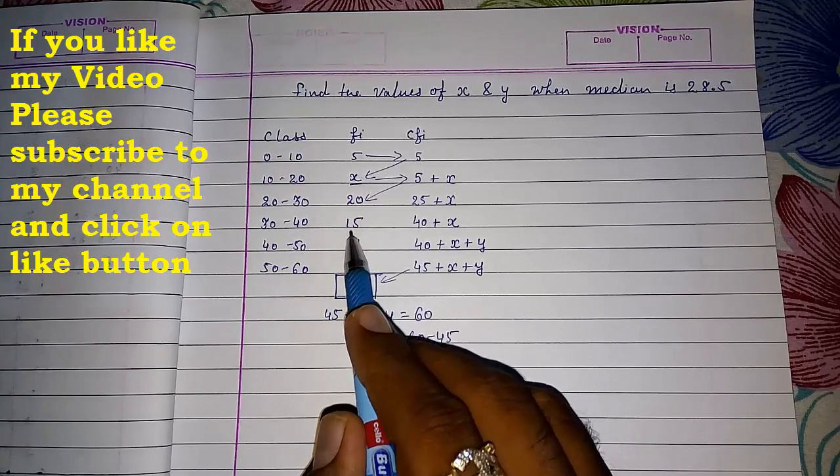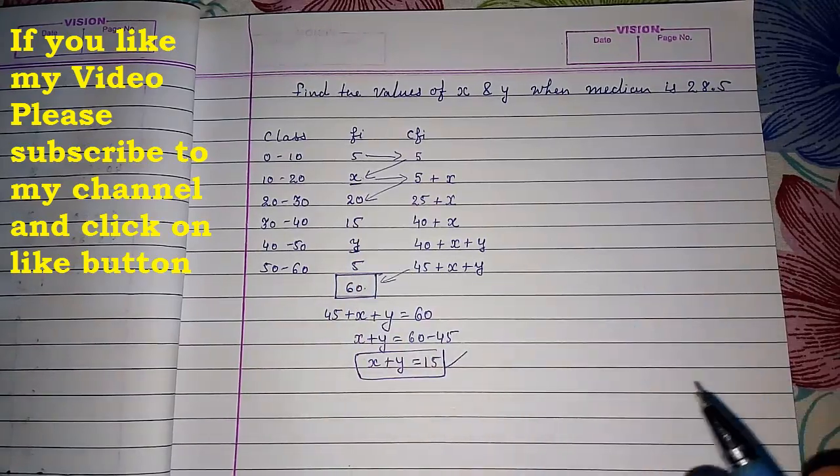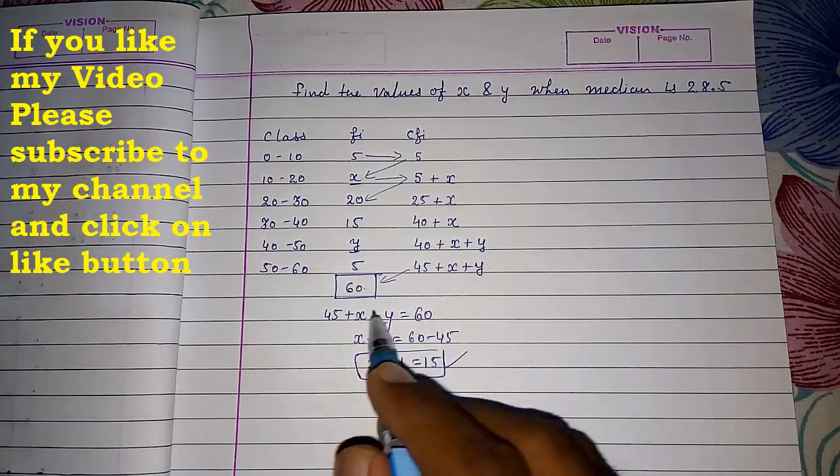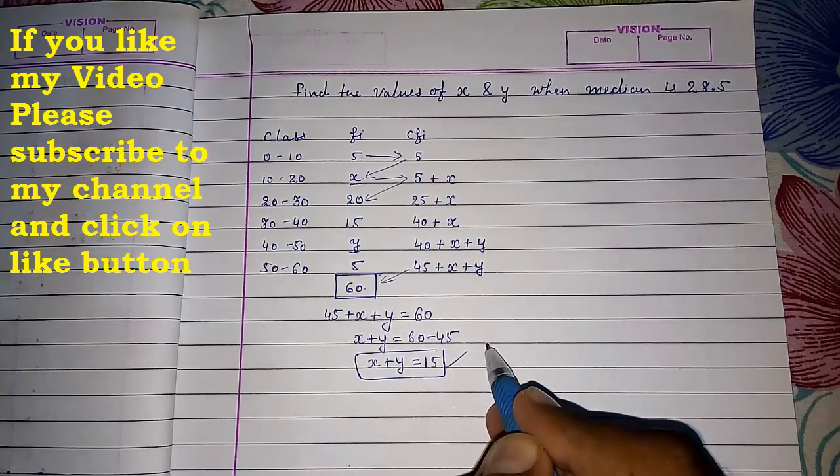Actually two variables are there, two unknown variables are there. So we have to find two equations. Then and only then we can find it. Now we got first equation.